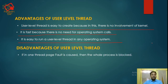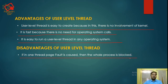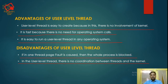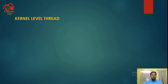What are the disadvantages? If a page fault occurs, the whole process is blocked. In user-level threads, there is no coordination between threads and the kernel. As we know, there is no involvement of the kernel in user-level threads, so there is no coordination between threads and the kernel.